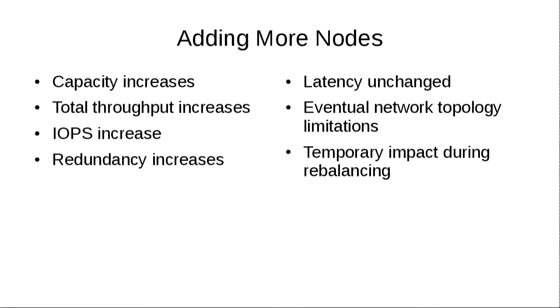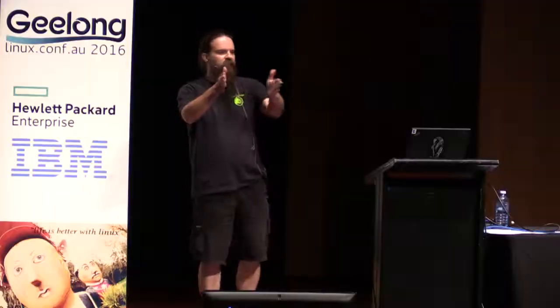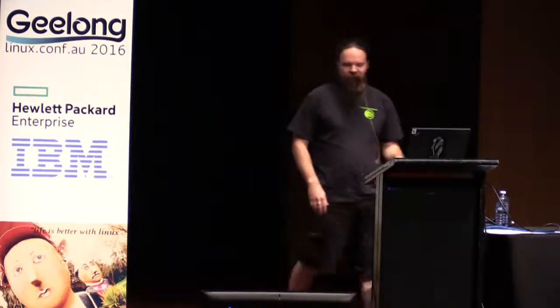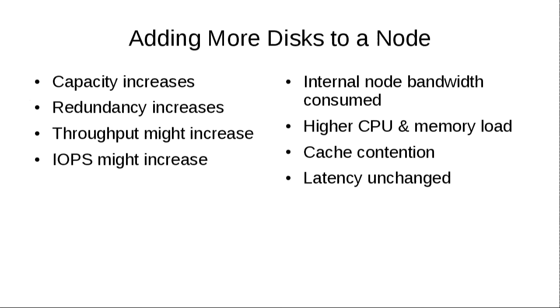If you add more nodes to a Ceph cluster, lots of nice things happen. The capacity increases, total throughput and IOPS increase, and redundancy increases. The latency won't change. Eventually you'll run out of ports on your switch or hit some other network topology limitation, and there's a temporary impact during rebalancing when you add a new node — Ceph always tries to keep all your data evenly spread across the cluster. Adding more disks to a node is similar: capacity and redundancy increase, throughput and IOPS might increase, but it will consume internal node bandwidth and there may be higher CPU and memory load and cache contention. It won't change latency.